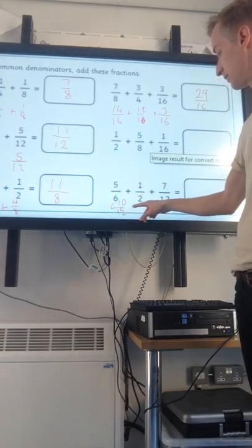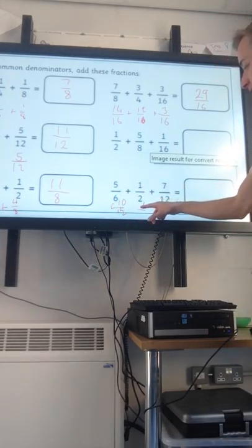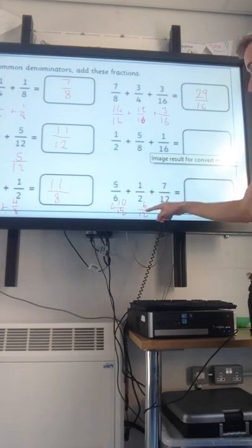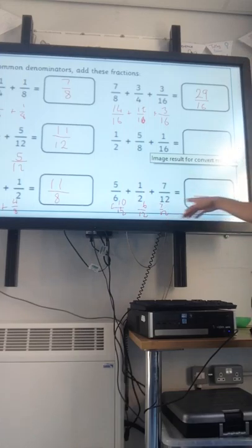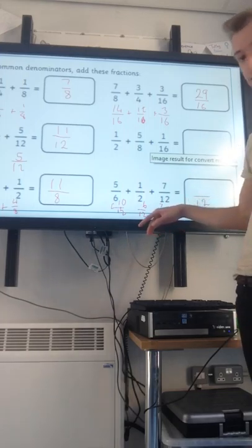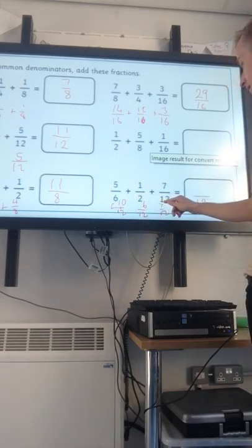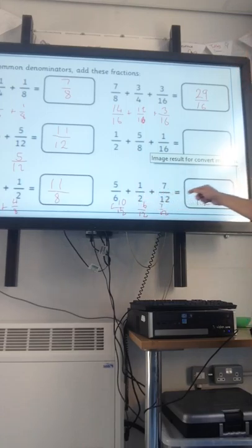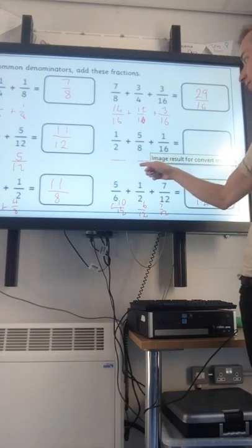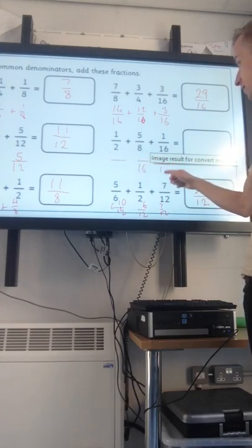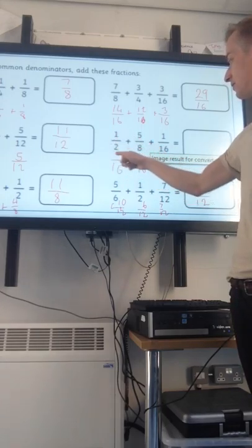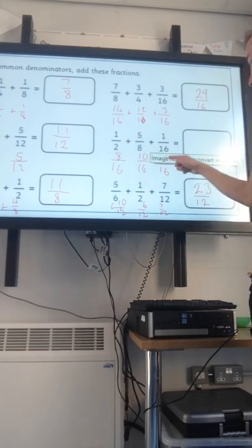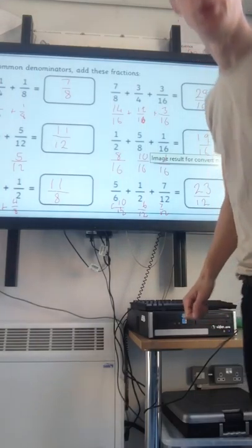And then the last one down here. Sensible common denominator. Lowest common multiple of 6, 2 and 12 is 12. So I'm going to turn this. Double it. We've got 10 twelfths times it by 6, because 2 times 6 is 12. And that's already 7 twelfths. Denominator, oh sorry, I missed that one as well. Denominator stays the same, 16. 10 add 6 is 16. Add the 7 makes 23 twelfths.